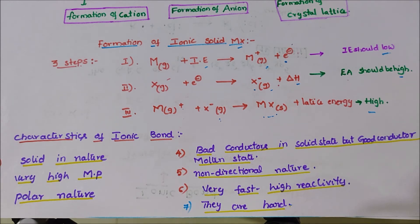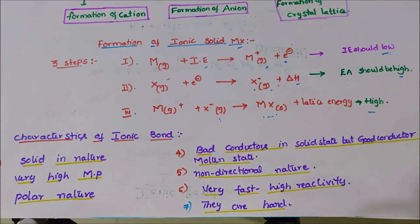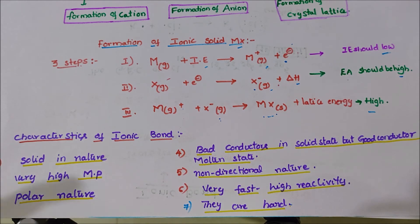Fifth, ionic bonds have non-directional nature because they do not have any specific shape. Sixth, ionic reactions are very fast. Seventh, ionic compounds are generally hard in nature.